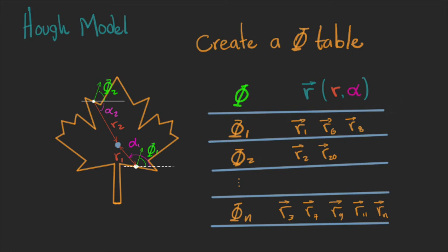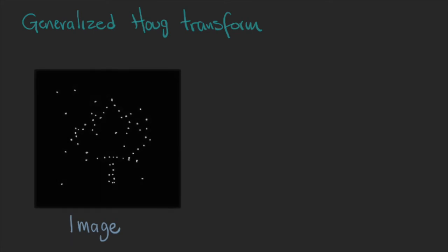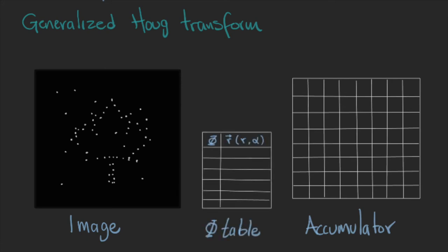Okay, once we have our model of the shape, we can search for it in the image. So the generalized Hough transform goes in this way. We create an accumulator matrix full of zeros. The goal is to find the location of the anchor point of our shape.